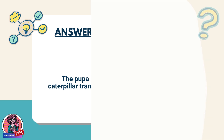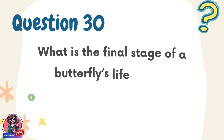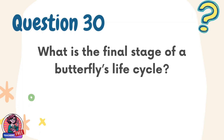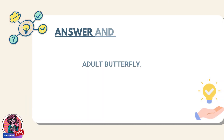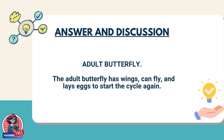Question 30. What is the final stage of a butterfly's life cycle? Answer: Adult butterfly. The adult butterfly has wings, can fly, and lays eggs to start the cycle again.